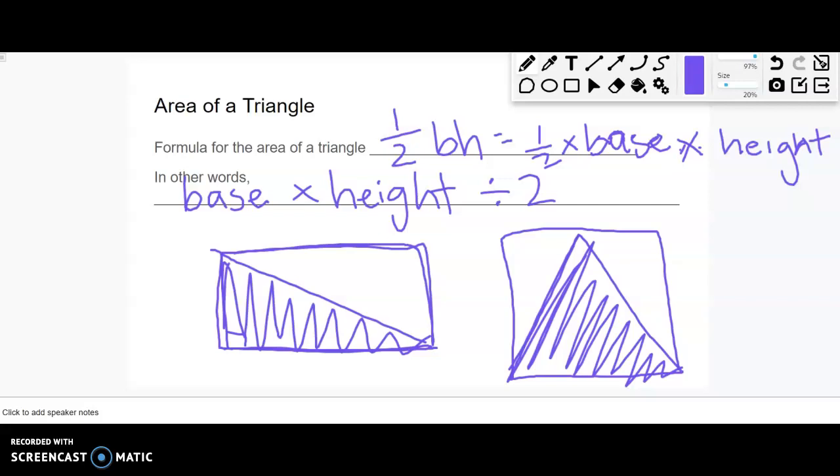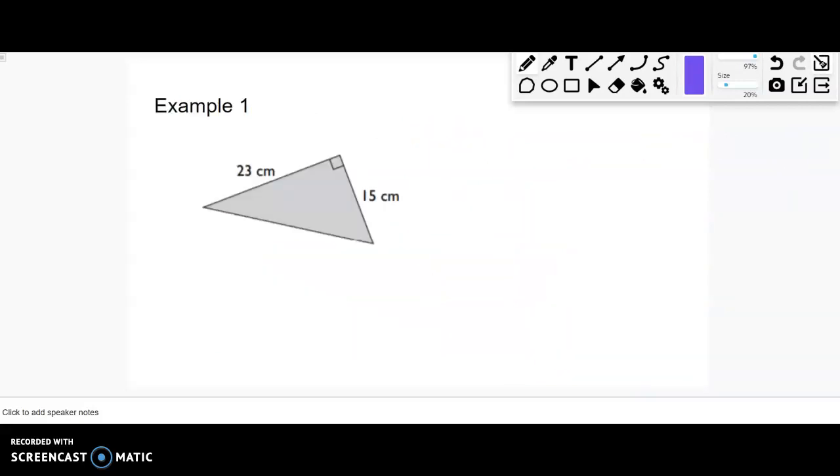So let's do some examples. So this one is one that's quite straightforward. Not all of them will be quite so straightforward. If this is the base, then this is the height, because they form a right angle, or vice versa.